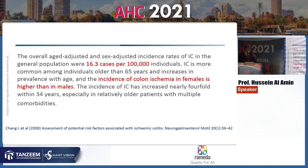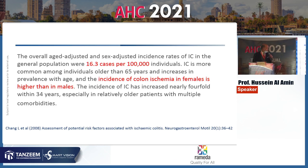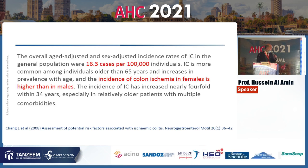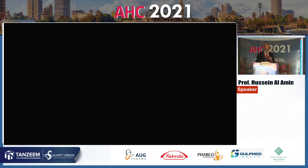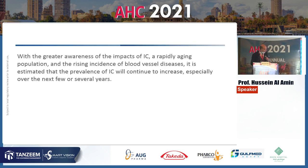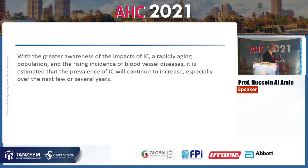The incidence has increased over the last 30 years fourfold, starting at six per 100,000 in 1980 to 23 per 100,000 in 2009, due to greater awareness of ischemic colitis, a rapidly aging population, and rising incidence of blood vessel disease. The prevalence is expected to continue to increase over the next several years.